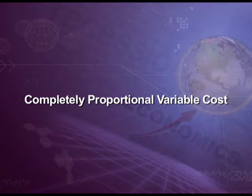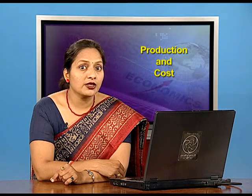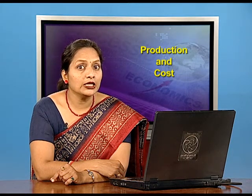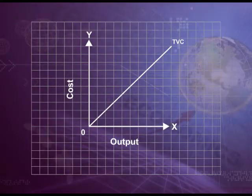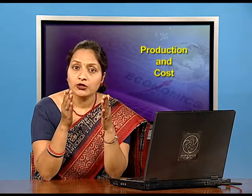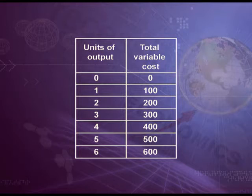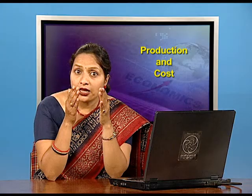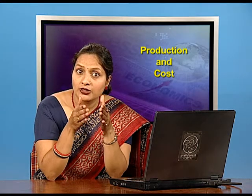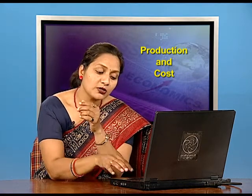The first type is completely proportional variable cost. This variable cost rises in the same proportion as output increases. This curve will be a straight line upward-sloping curve touching the origin. For example, as units of output go from 0 to 6, total variable cost is 0, 100, 200, 300, 400, 500, and 600 — meaning as units of output increase, total variable cost also increases in the same proportion.